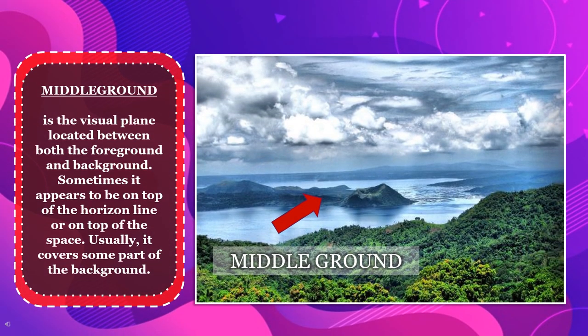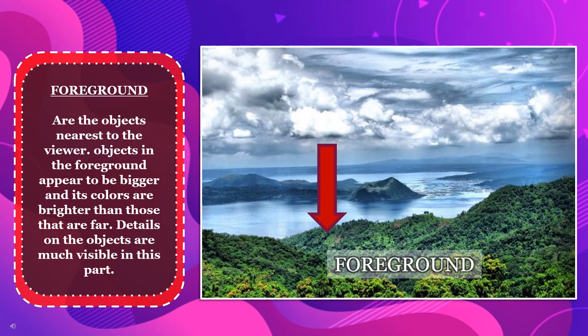Middle-ground is the visual plane located between both the foreground and background. Sometimes it appears to be on top of the horizon line, or on top of the space. Usually it covers some part of the background. Foreground: these are the objects nearest to the viewer. Objects in the foreground appear to be bigger, and its colors are brighter than those that are far. Details on the objects are much more visible in this part.